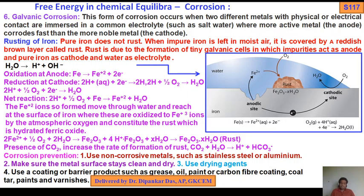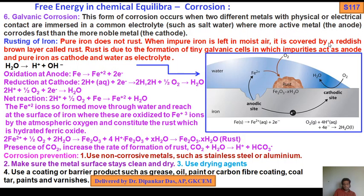Next is rusting of iron — this is very, very important. Pure iron does not rust. When impure iron is left in moist air, it is covered by a reddish-brown layer called rust. Rust is due to the formation of tiny galvanic cells in which the impurity acts as the anode, pure iron acts as the cathode, and water acts as the electrolyte.